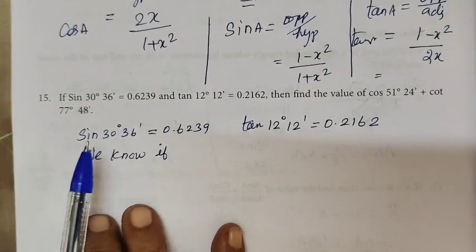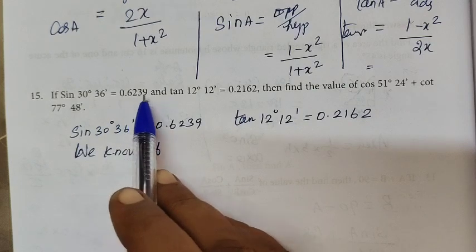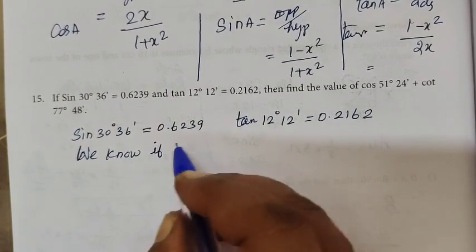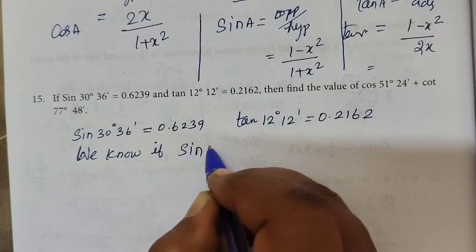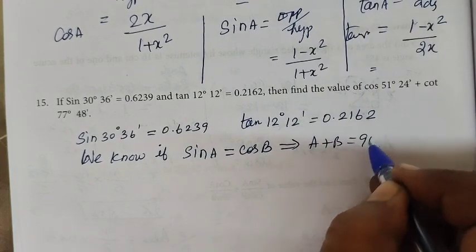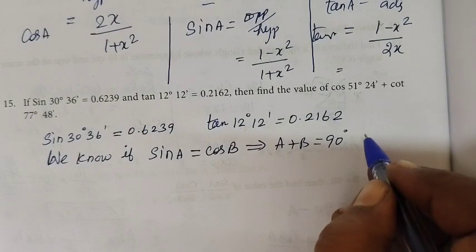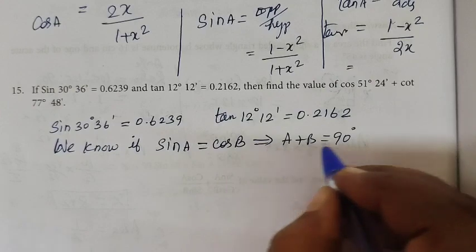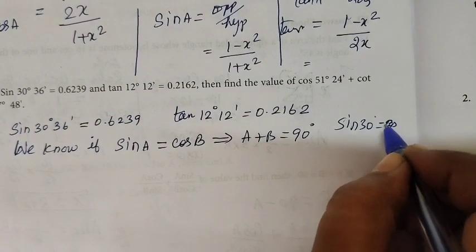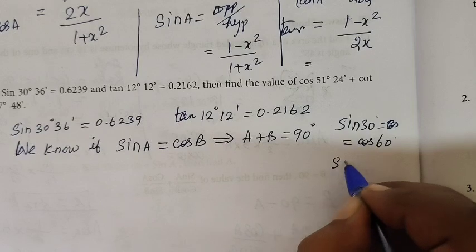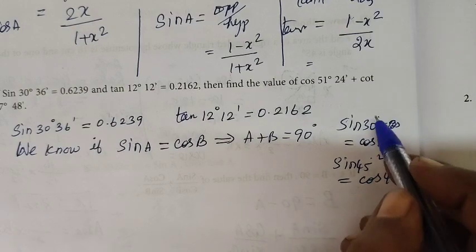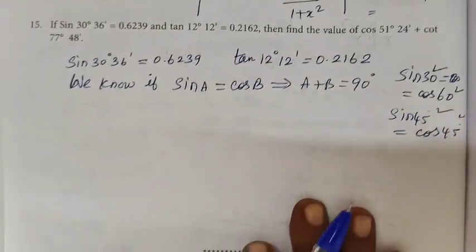Question number 15: if sin 30° equals a value and tan equals another value, find the value of the expression. This uses a very important property: sin a equals cos b when a plus b equals 90°. That is the complementary angle property. Sin 30 equals cos 60, and sin 45 equals cos 45.